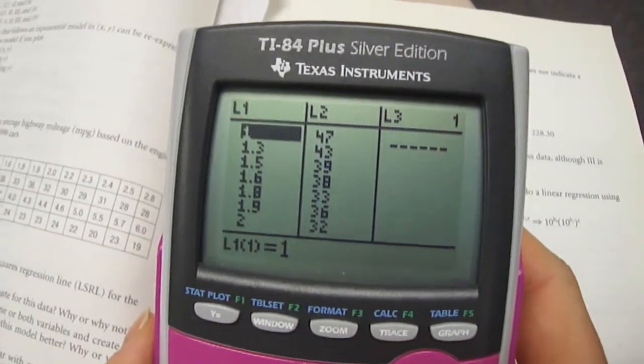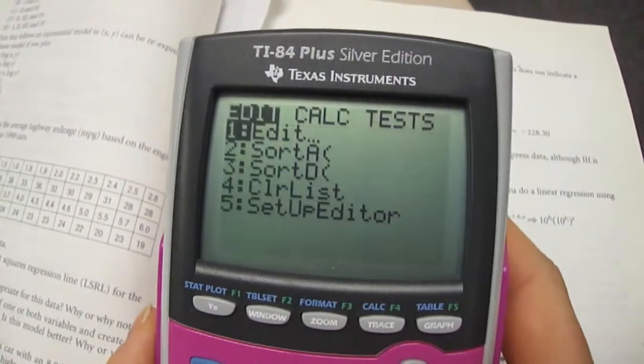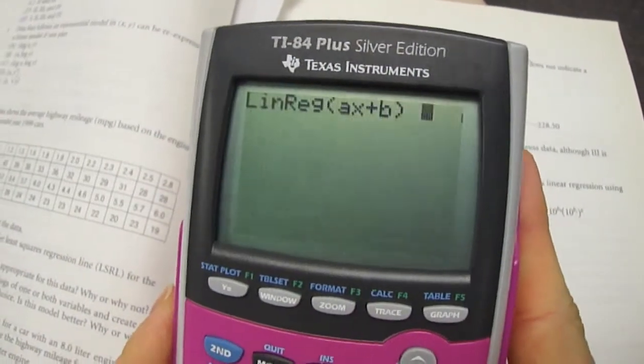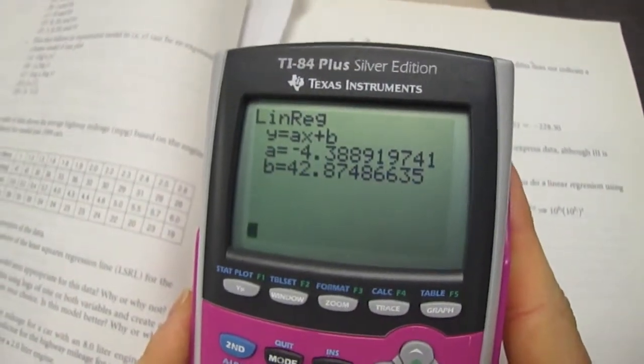After entering the data in the table, we went to stat, calc, linear regression, and we found the least squares regression line.